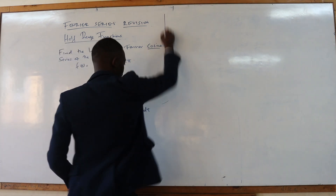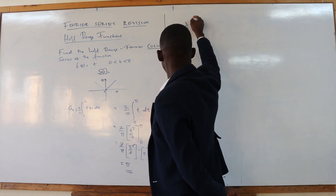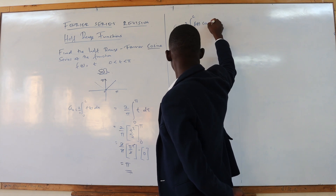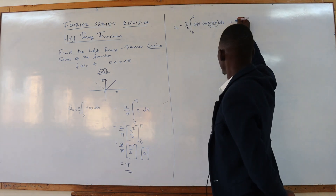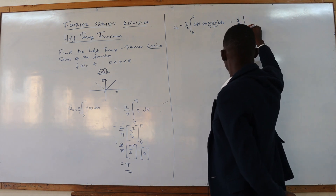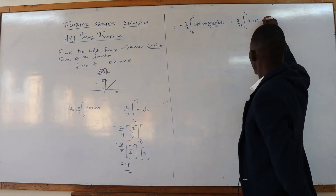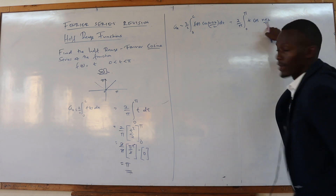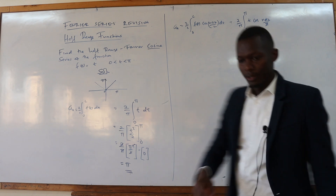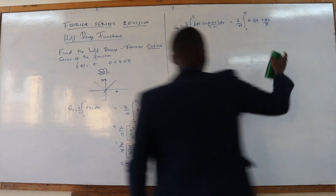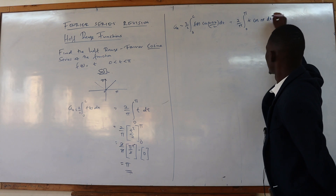Now we calculate AN. The AN formula is given by 2 over L, from 0 to L, f(t) cos(nπt/L) dt. Replacing, we have 2 over π, from 0 to π. Our f(t) is t, so the function is t cos(nπt/π). Now we have π and π here — these cancel. So we remain with t cos(nt) dt.